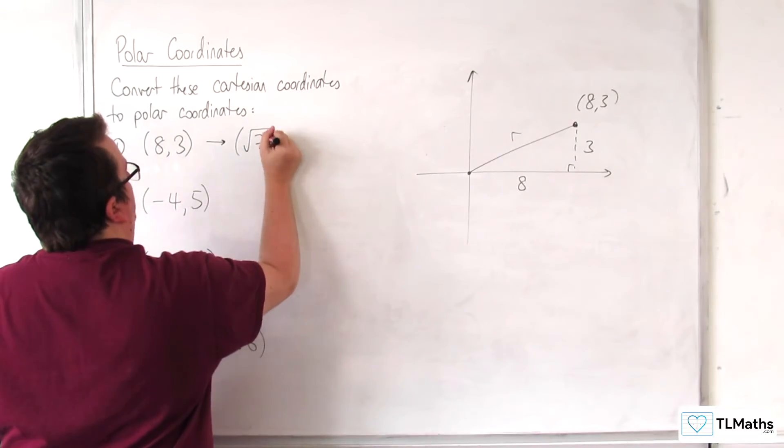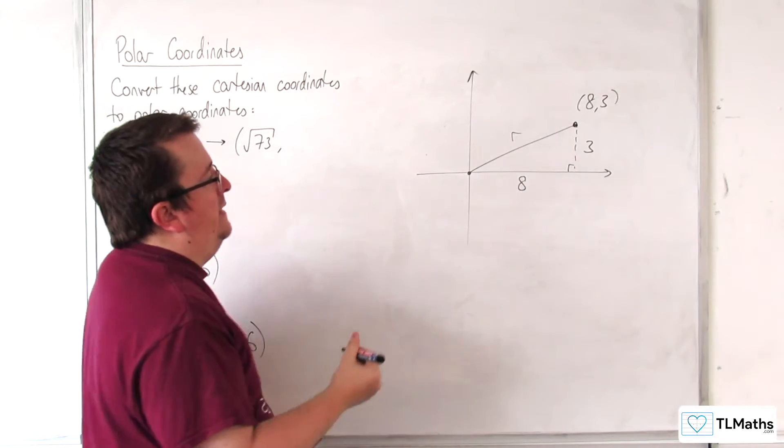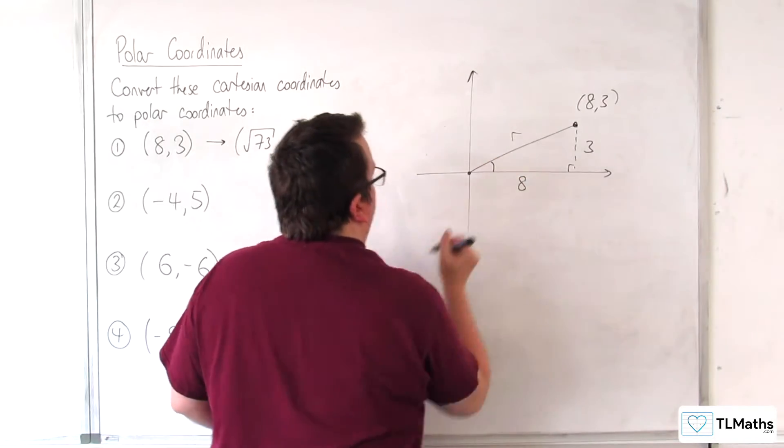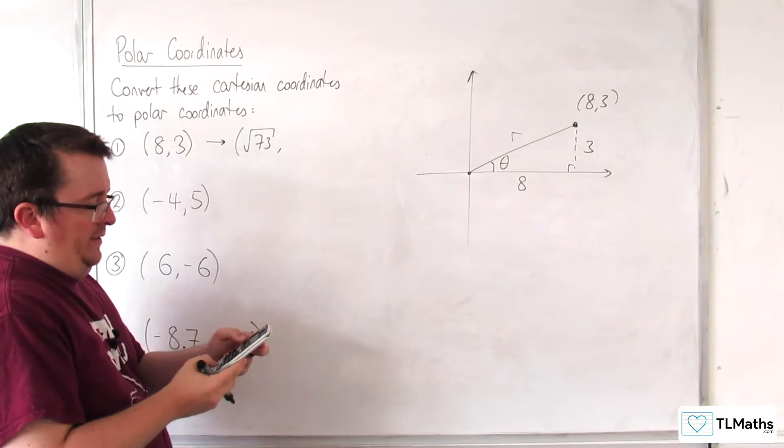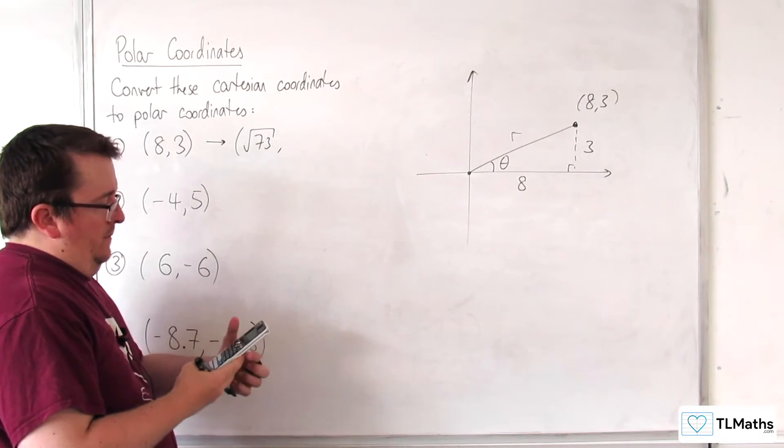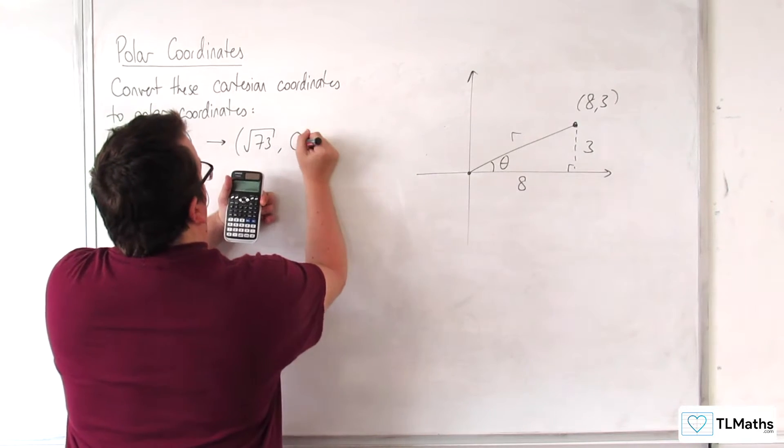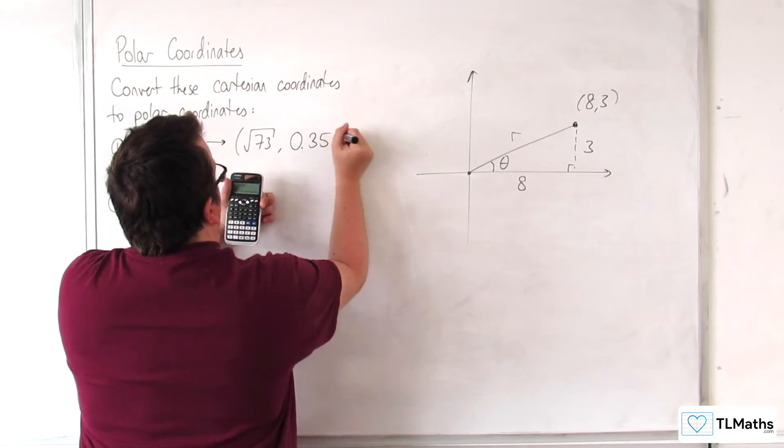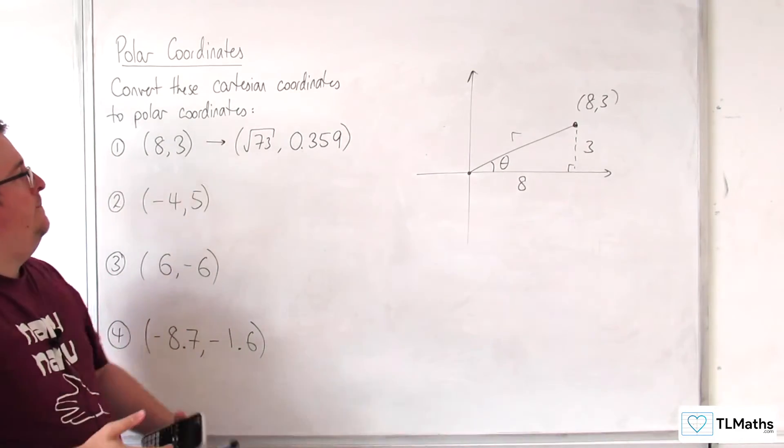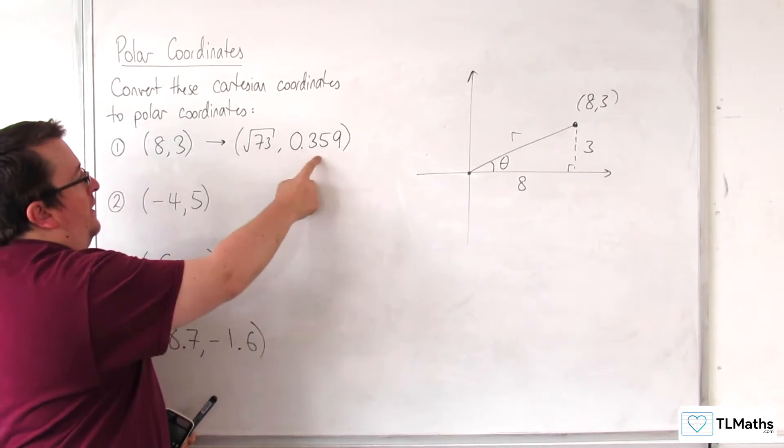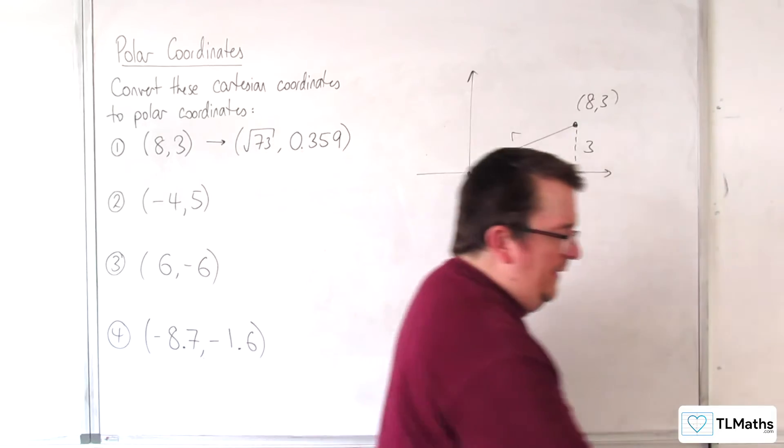So root 73 is R. And then we've got the angle theta, which is going to be the inverse tan of 3 over 8. So 0.359 to 3 significant figures. So that's my R, that's my theta, and that's our first one.